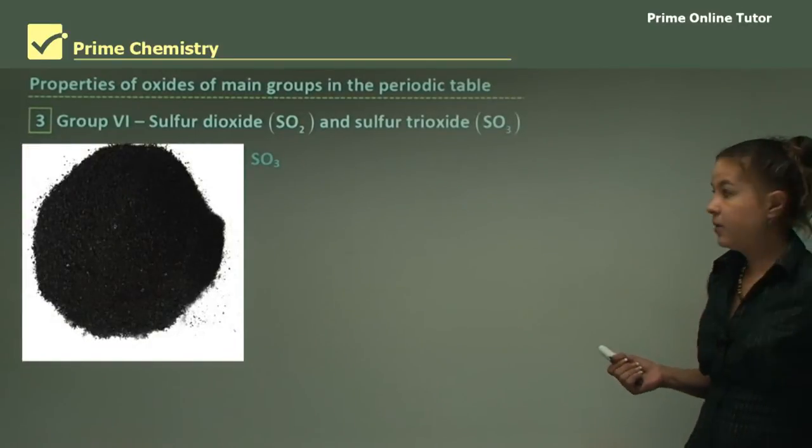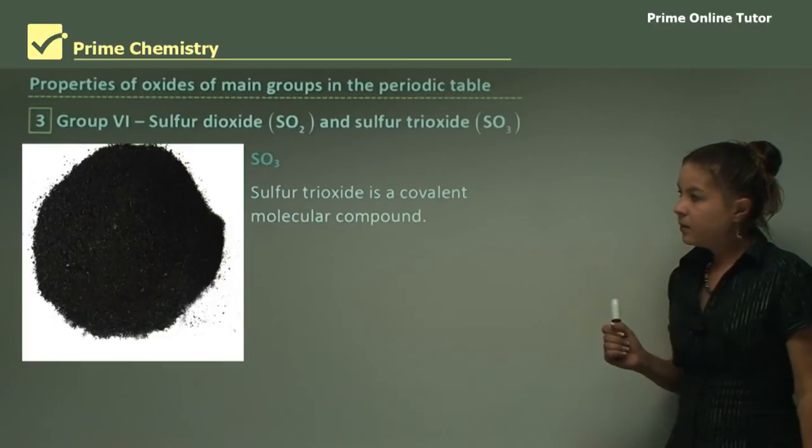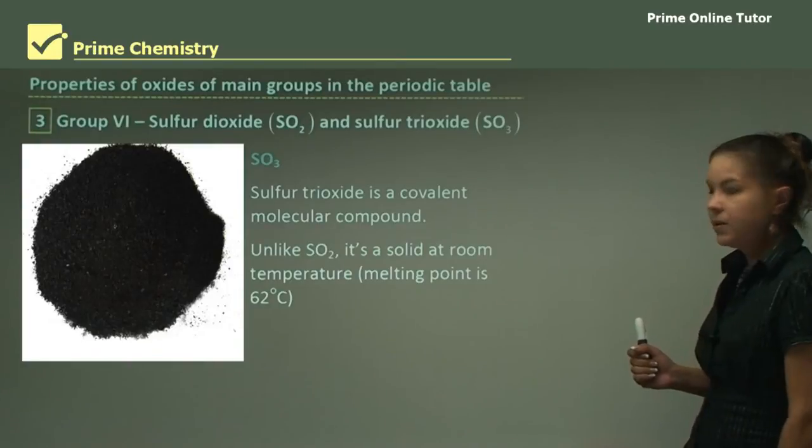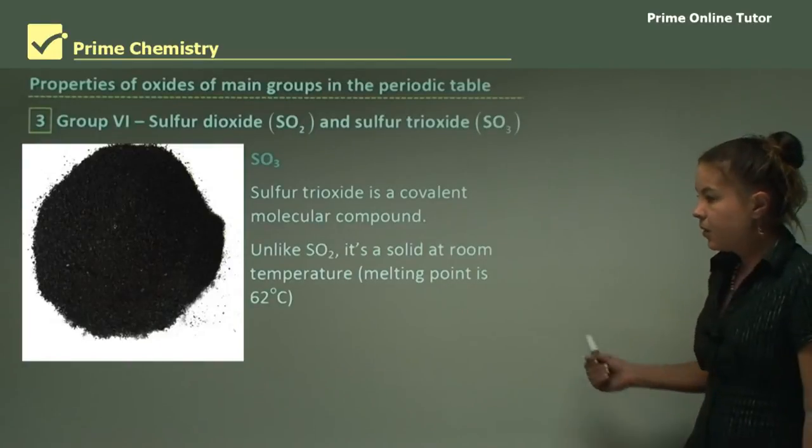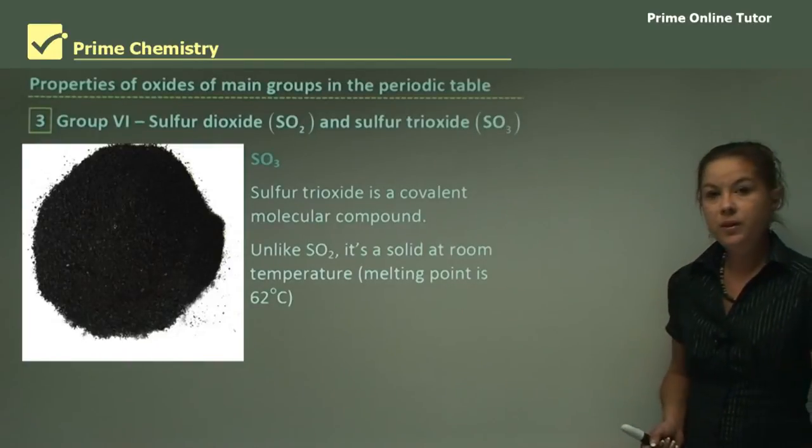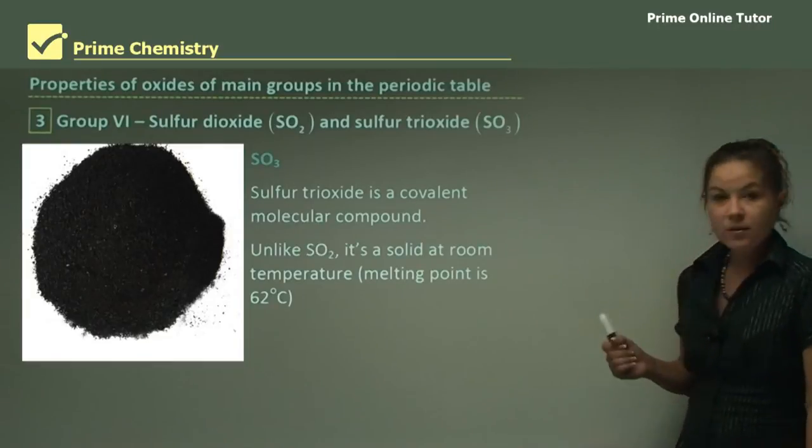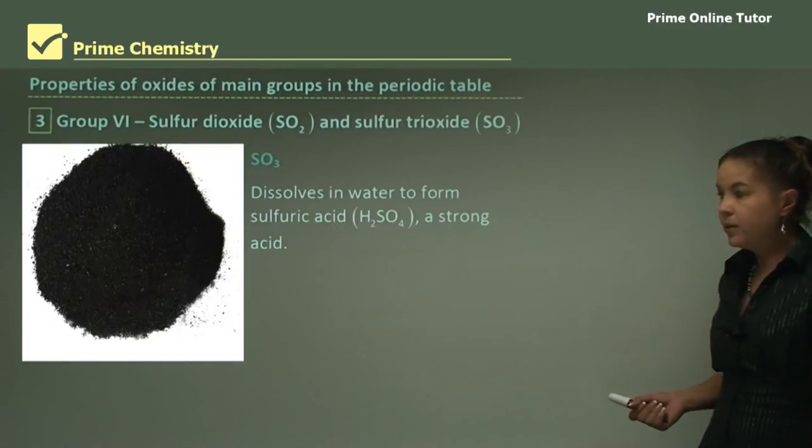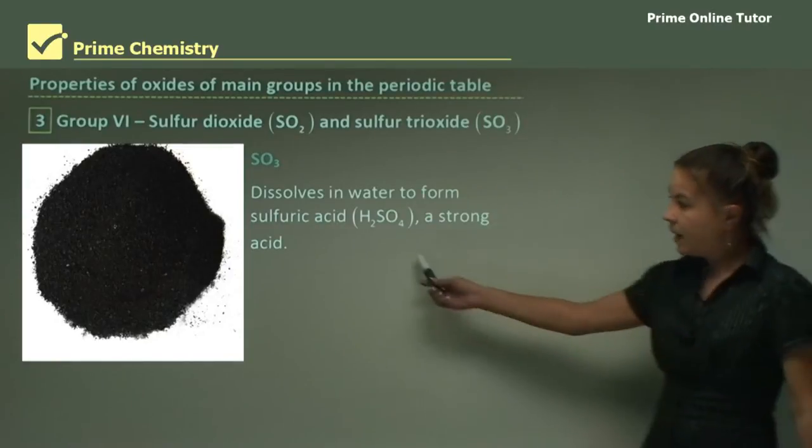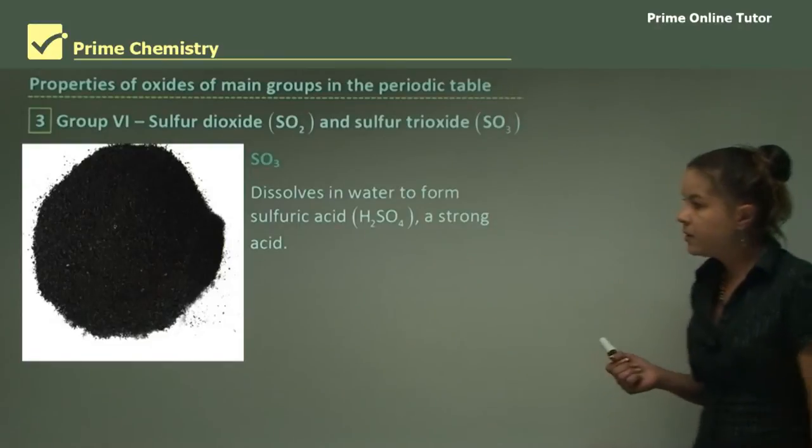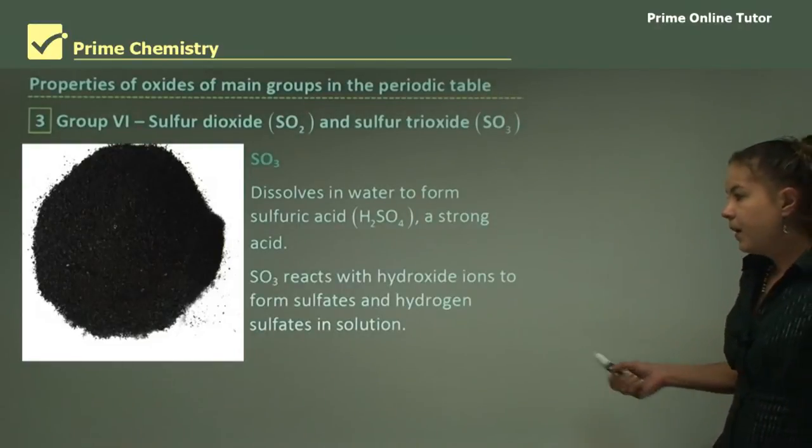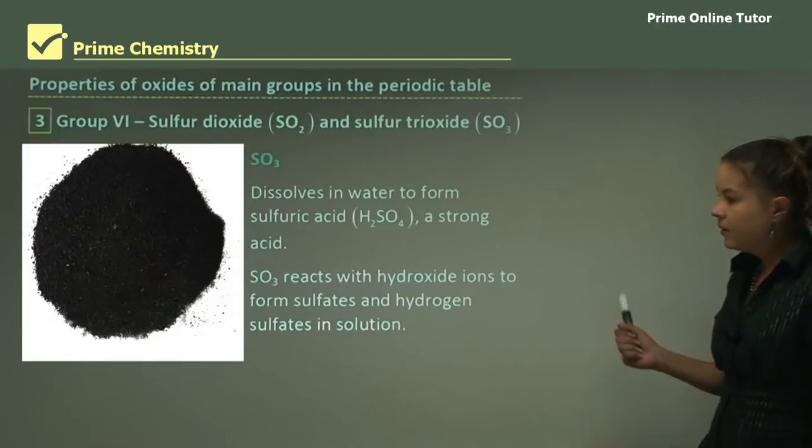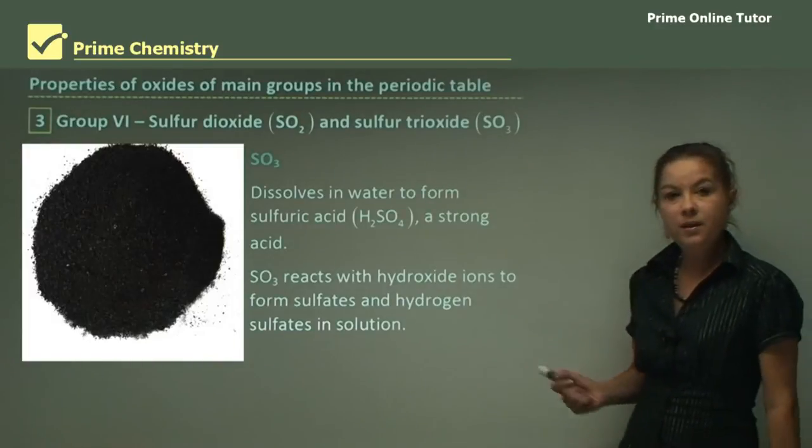Looking now at sulfur trioxide, SO3 is a covalent molecular compound. Unlike SO2, it's a solid at room temperature with melting point 62 degrees Celsius. As you can see from the picture, that's sulfur trioxide, a black solid. It dissolves in water to form sulfuric acid H2SO4, which is quite a strong acid. SO3 reacts with hydroxide ions OH- to form sulfates and hydrogen sulfates in solution.